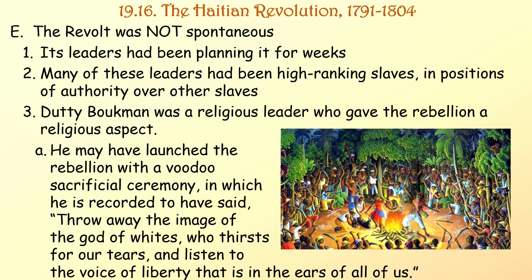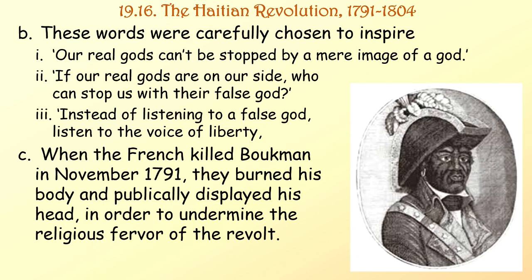The revolt was not spontaneous — its leaders had been planning it for weeks. Many had been high-ranking slaves in positions of authority over other slaves. Dutty Bukman was a religious leader who gave the rebellion a religious aspect. He may have launched it with a voodoo sacrificial ceremony, in which he reportedly said: 'Throw away the image of the god of whites who thirsts for our tears, and listen to the voice of liberty that is in the ears of all of us.' When the French killed Bukman in November 1791, they burned his body and publicly displayed his head to undermine the religious fervor of the revolt.